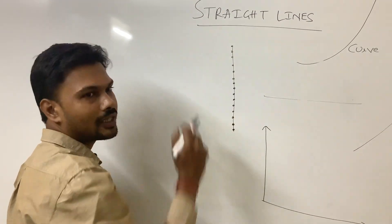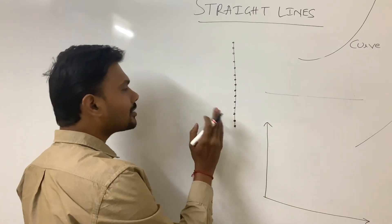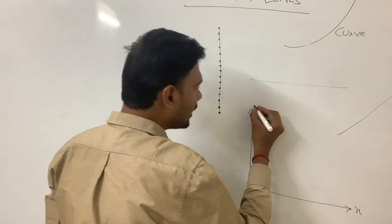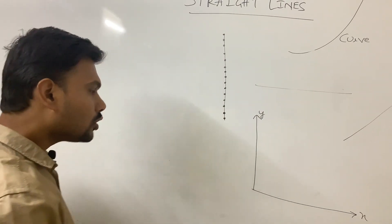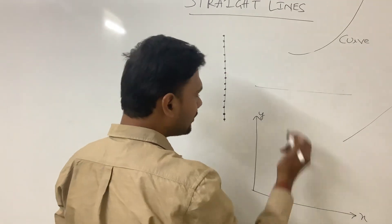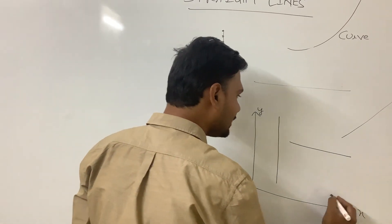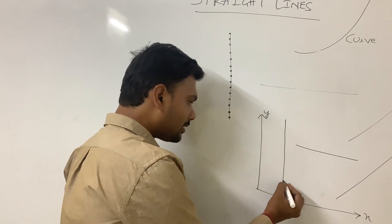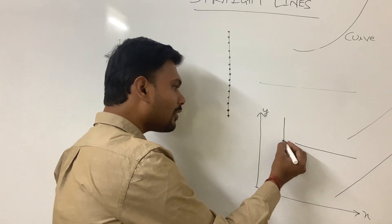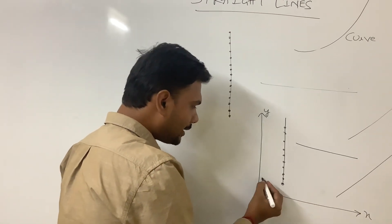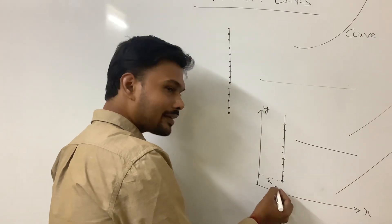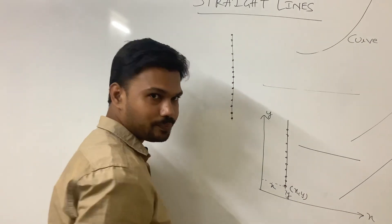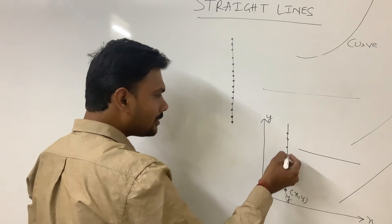A straight line is made up of an infinite number of points. When we plot a straight line on a graph paper — an x-y graph — each point has a certain location. For example, a point located at a distance x from the y-axis and a distance y from the x-axis has the coordinate (x, y). Likewise, all points on the line will have certain coordinates.